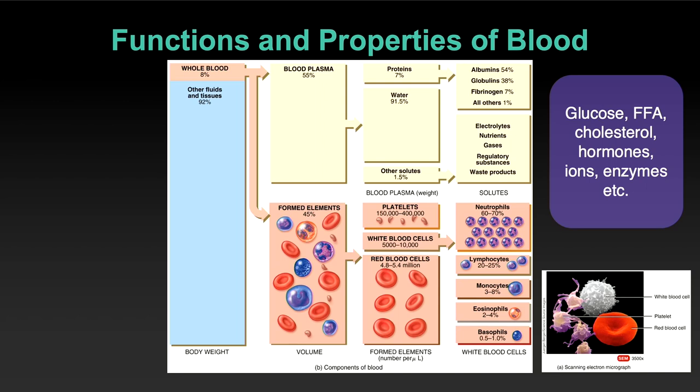There are a host of other proteins in plasma with varying functions, mostly to help hold on to some of the fluid. We're not going to get into too much depth with those. It's important to realize, though, that blood is more than just fluid and red blood cells — the variety of cells allows for a variety of functions. It's a very active tissue.